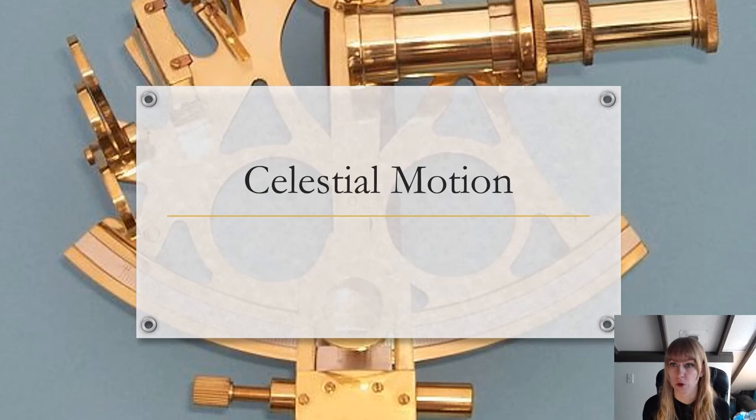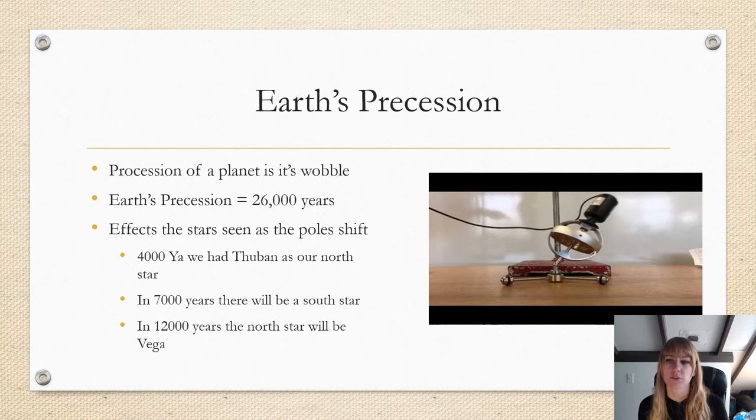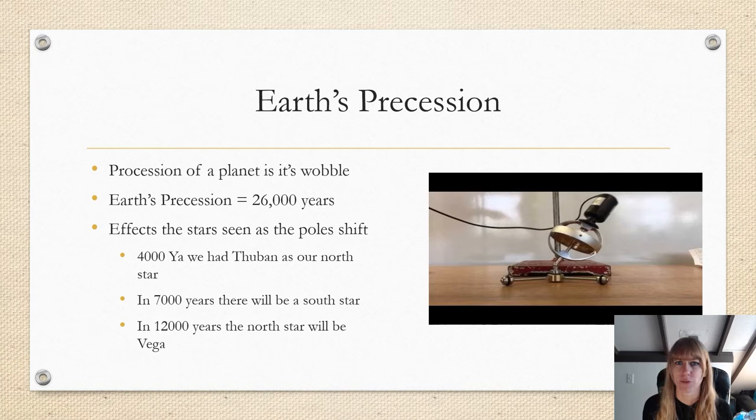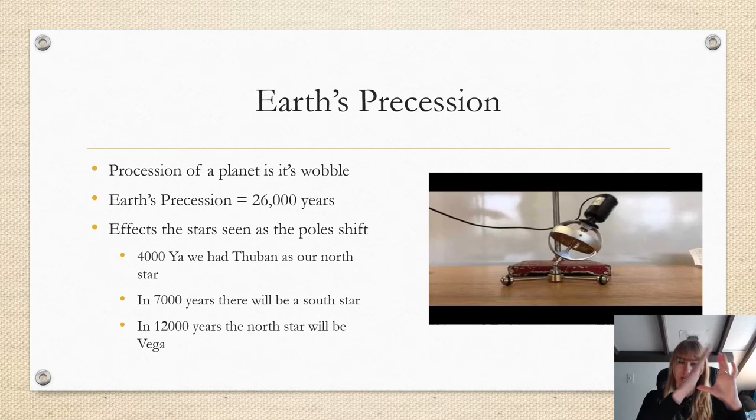So Earth's precession. The first thing I want you to do here is hit play on the little video clip that's here for you. I'm sure you all vaguely remember the word precession from our first couple of lectures. I'm going to define it for you explicitly. The precession of a planet is the wobble that happens as it spins. Remember, planets aren't straight up and down, they all have an axial tilt, and that axial tilt as it spins causes it to go back and forth. That is the wobble, that is the precession of a planet.